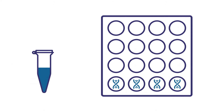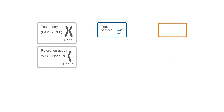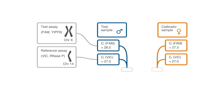Let's look at an example in which the target gene is on the X chromosome. In a male sample, we should find a copy number of one for that target. A baseline-subtracted cycle threshold, or DCT, is determined between the two assays. In our example, the unknown sample has a DCT of 1.5 and the calibrator a DCT of 0.5.